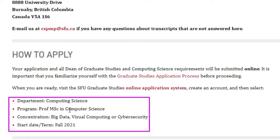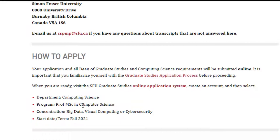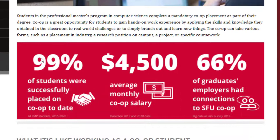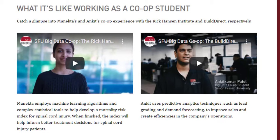The co-op program is a mandatory component and part of the curriculum, to be completed in the last semester. According to their data, 99% of students enrolled in this course were successfully placed through campus recruitment, with an average salary of 4,500 Canadian dollars per month — a very decent figure that can also help offset your tuition fees. The university also shares testimonials from co-op students about the experience.